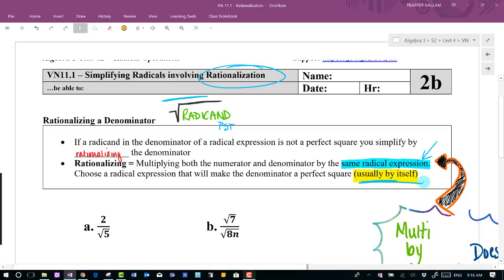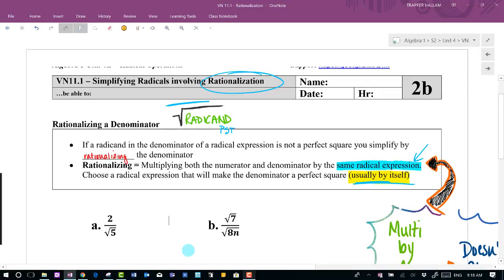Again, another way to say that is you're going to multiply by usually itself. What are we doing? Well, it has to be a form of one. Okay, so remember that rationalizing means that we're multiplying by a form of itself.